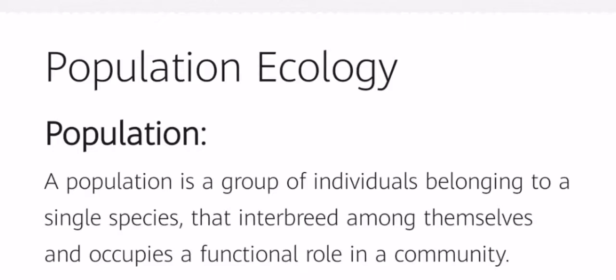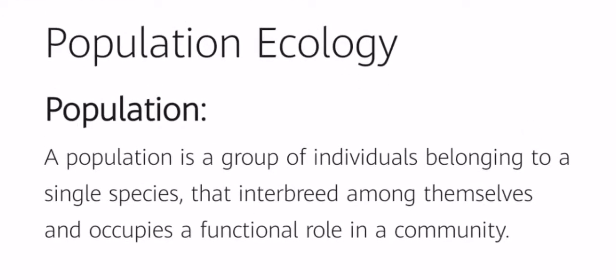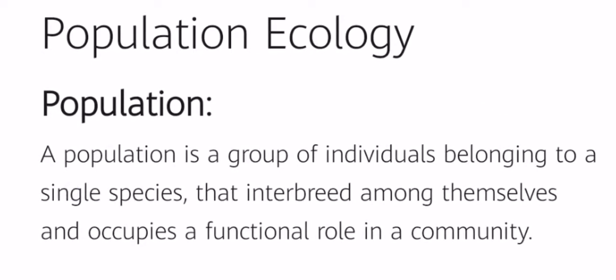Now let's get specific and understand population ecology. If you understand ecology and apply its concepts to a population — that is, a group of similar individuals belonging to a single species — you get to understand population ecology. A population is defined as a group of individuals belonging to a single species that interbreed among themselves and occupy a functional role in a community.